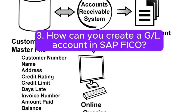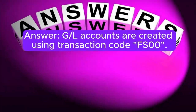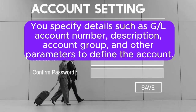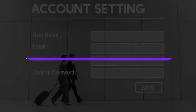Question 3: How can you create a General Ledger account in SAP FICO? Answer: General Ledger accounts are created using transaction code FS00. You specify details such as the General Ledger account number, description, account group, and other parameters to define the account.